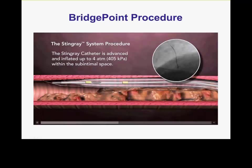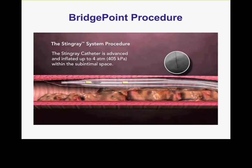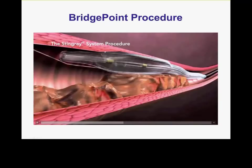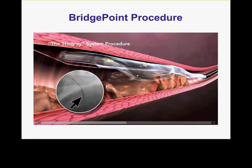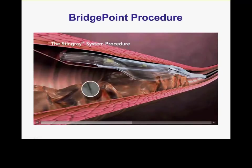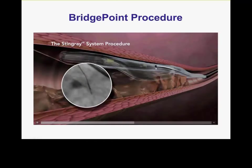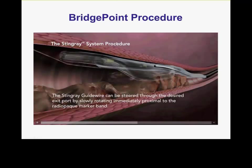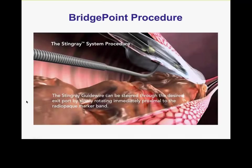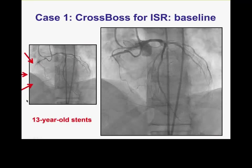The first step is to inflate the Stingray balloon — only up to 4 atmospheres, not higher, otherwise it ruptures. Once inflated it self-orients, with one surface facing up and one facing down. We then use the Stingray guide wire, specially designed with a 0.003" tip to catch tissue and avoid sliding across tissue planes. We try the first exit port — not the right one — then try the second port, it looks good, and we advance back into the distal true lumen.